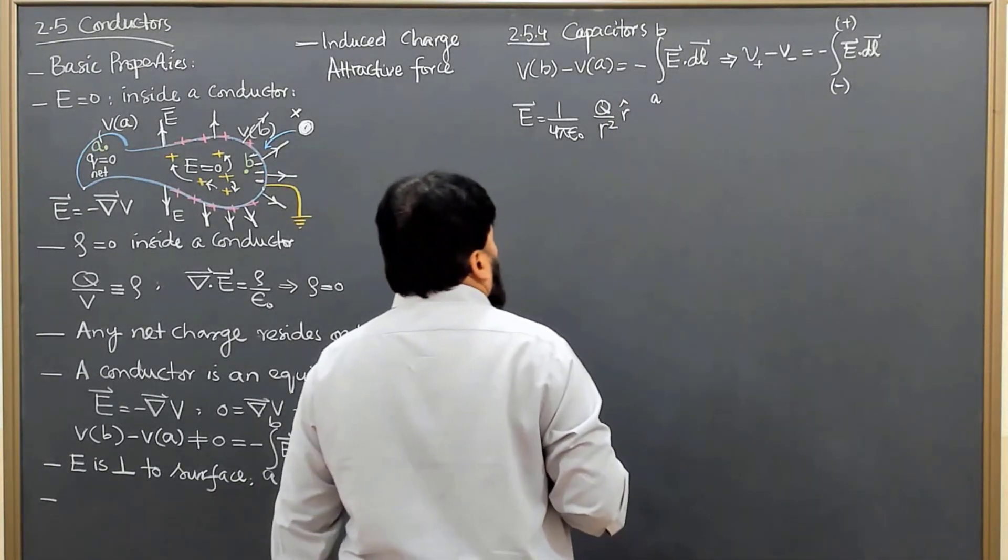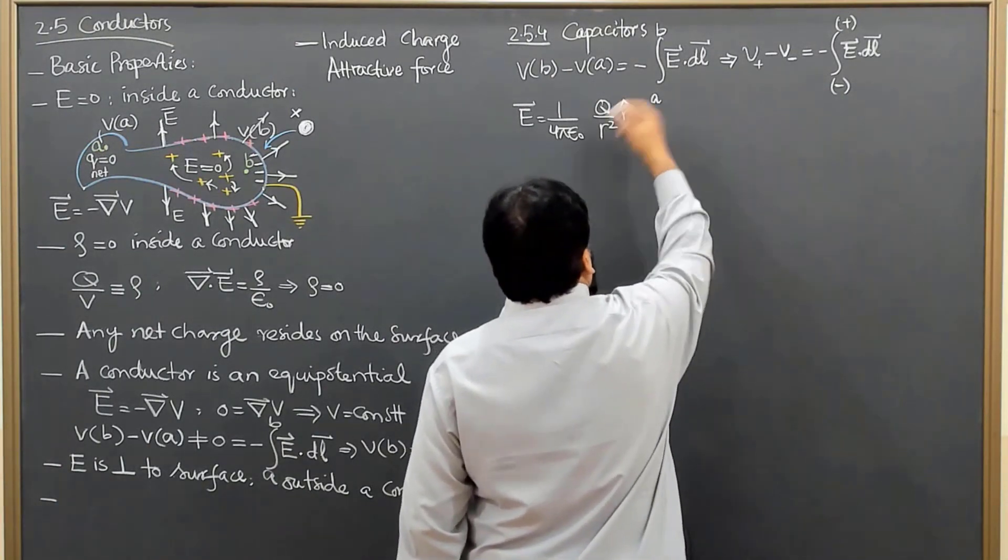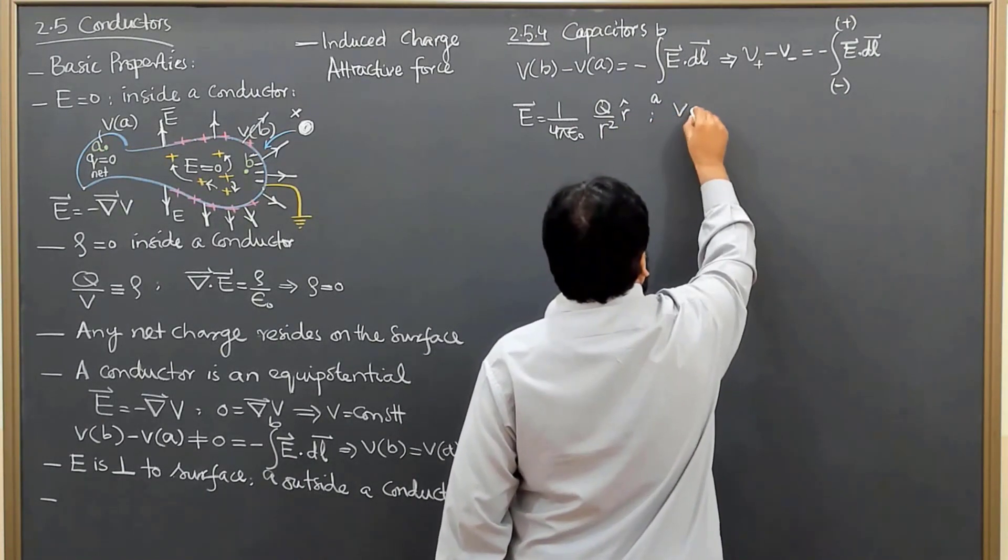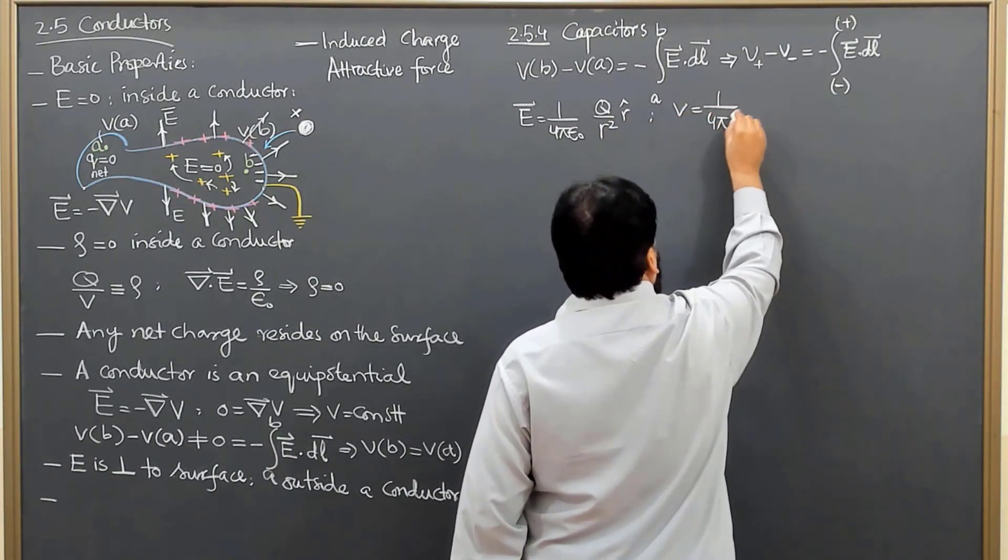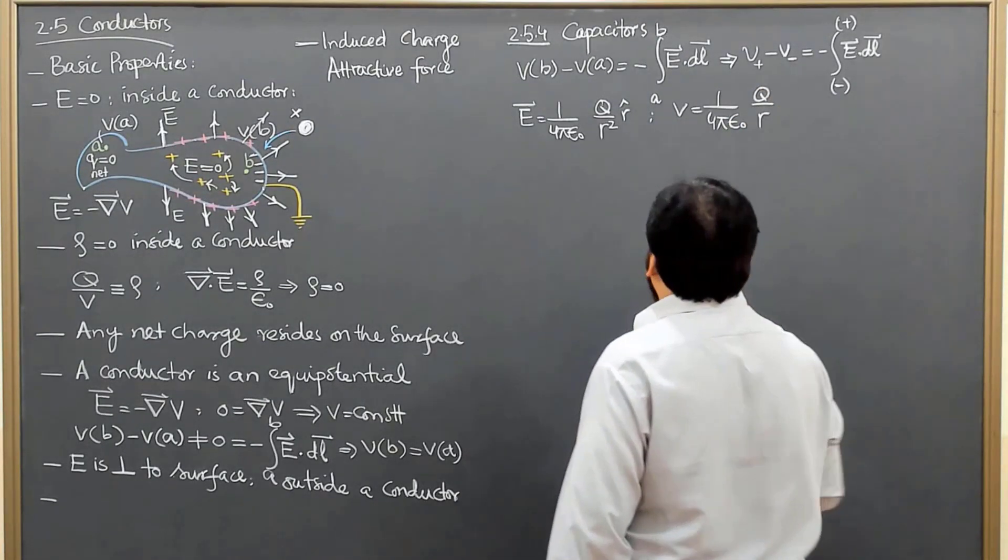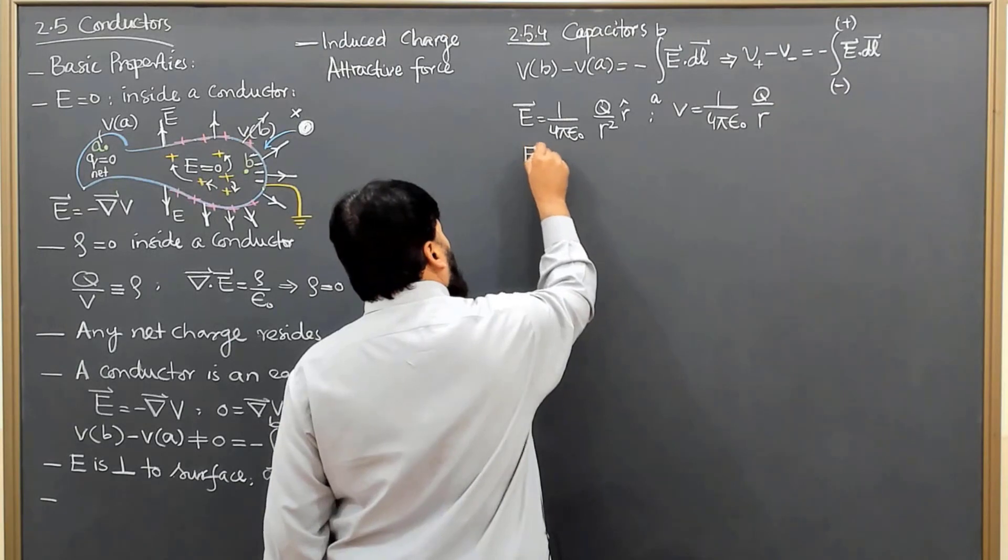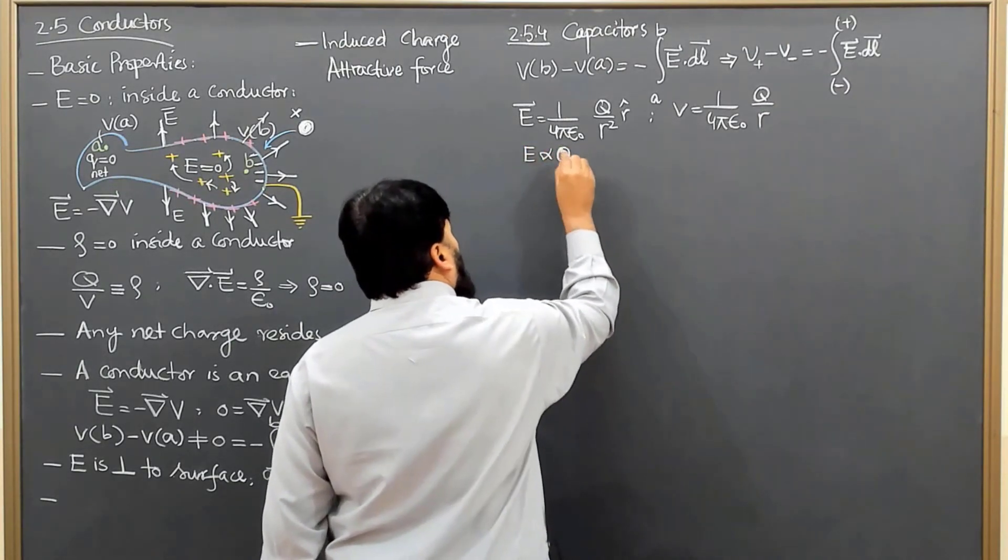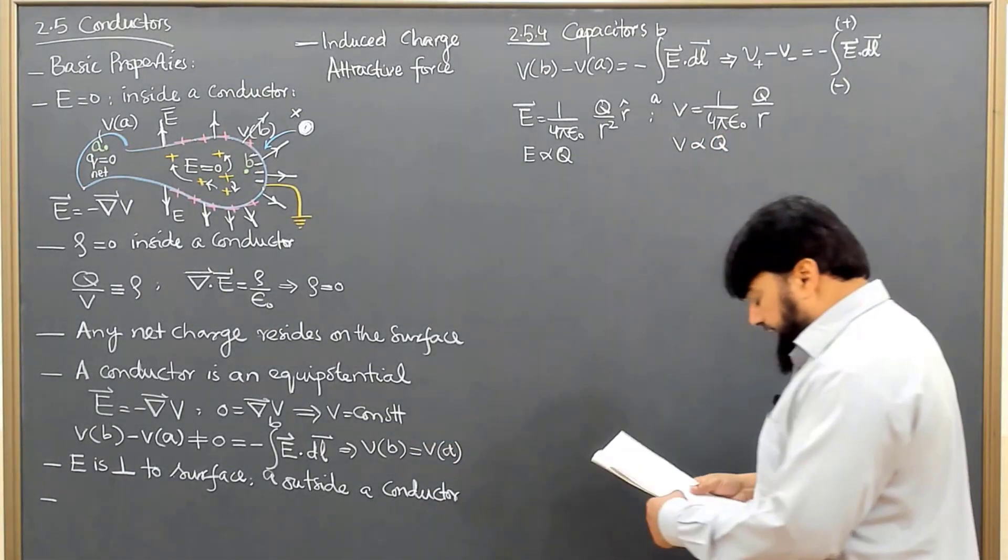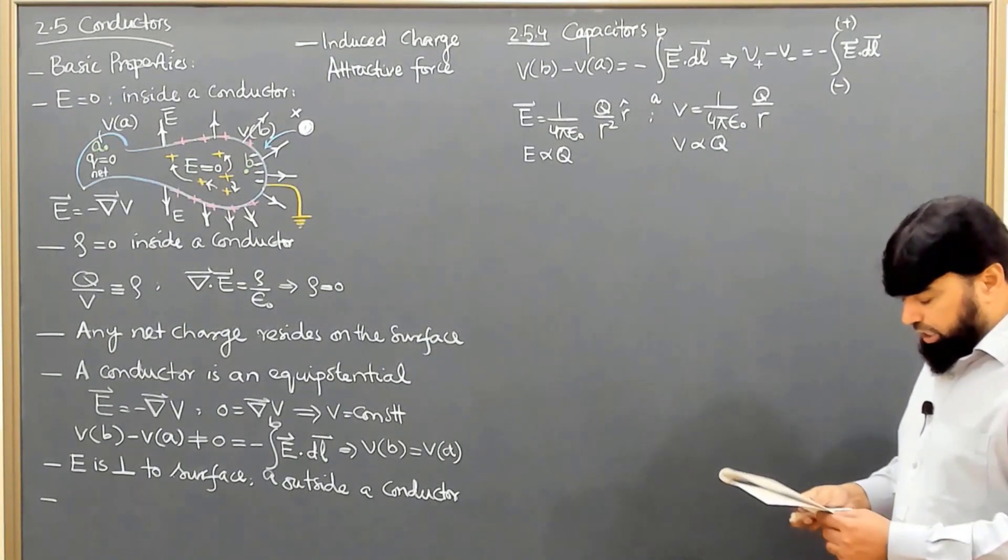I can write the electric field in terms of the origin, and V equals 1 over 4π epsilon naught times Q over R. Here I see that electric field is proportional to the charge, and V is proportional to the charge as well.